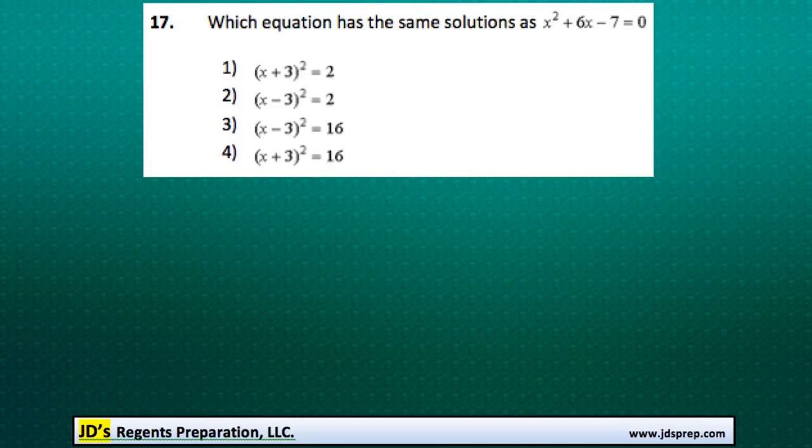This is problem number 17 from the January 2015 Algebra Regents exam. In this question, we're trying to find out which equation has the same solutions to x squared plus 6x minus 7 equals 0.